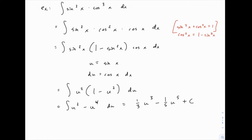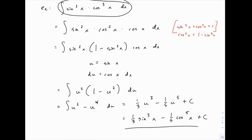Our last step: we replace all the u's with sine of x, giving us one-third sine cubed of x minus one-fifth sine to the fifth of x plus C. And there's our answer. As always, we could differentiate to check. If we differentiate the way it's written, odds are it won't look like what we started with because we used the Pythagorean identity and it's rewritten in a different form — but you could graph them to show that they are equivalent.